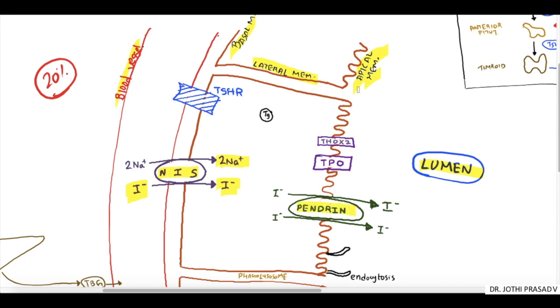The apical membrane has certain enzymes and genes which are responsible for thyroid hormone synthesis, that is TPO or thyroid peroxidase enzyme and toxin gene. The basal membrane has a chief receptor, that is thyroid TSH receptor.